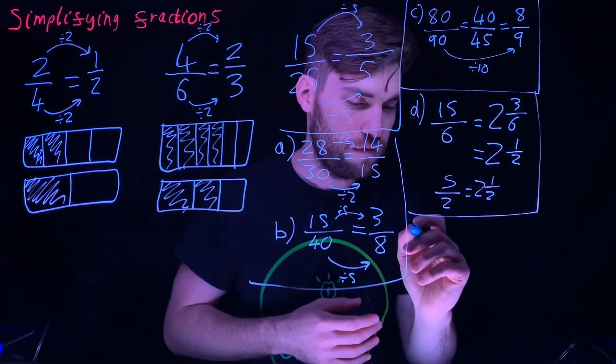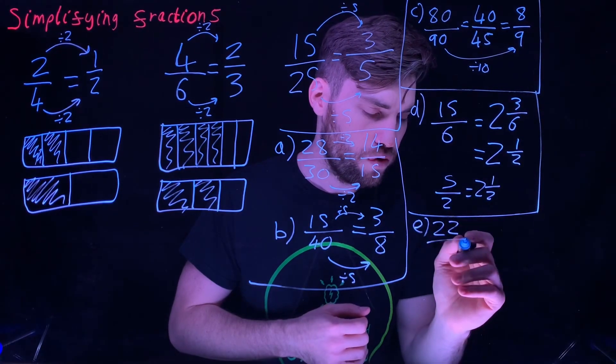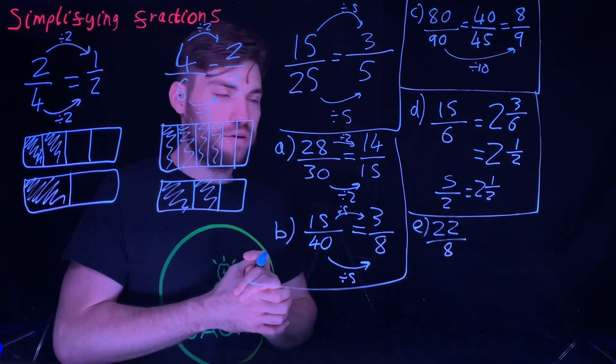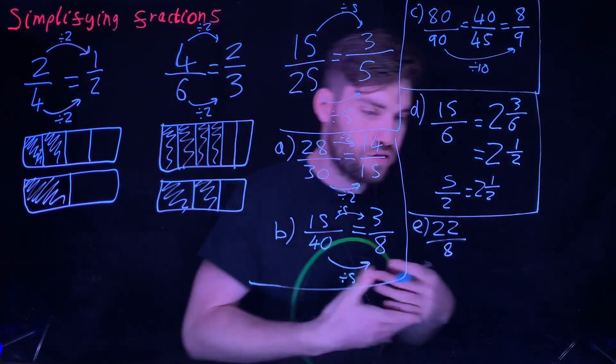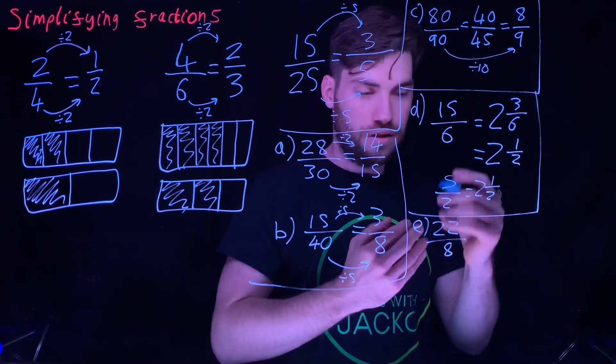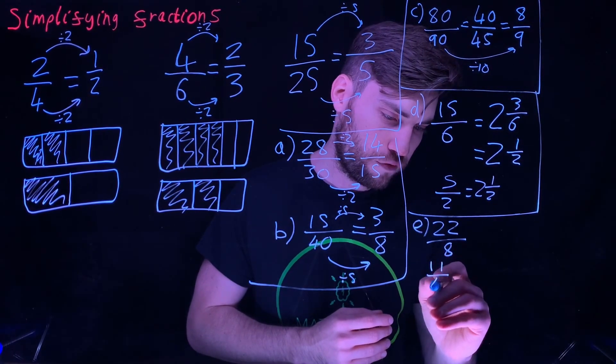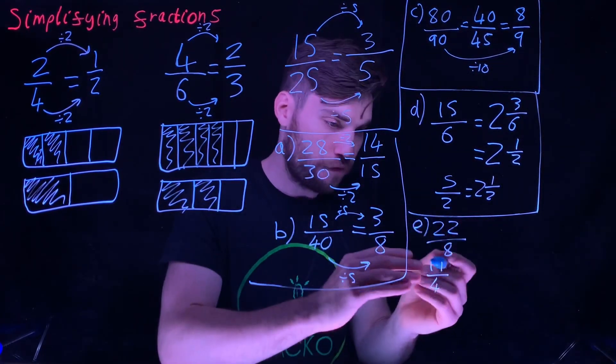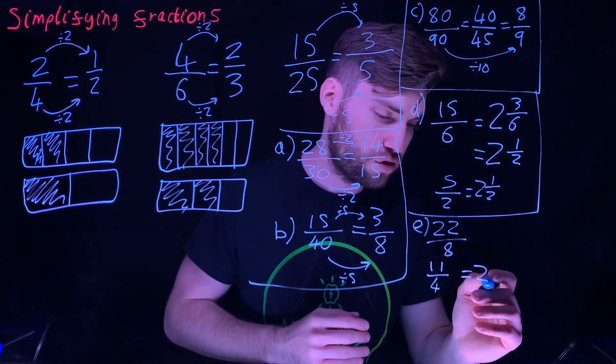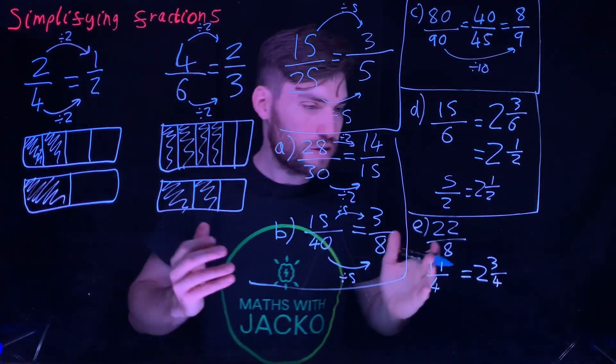We'll do one more involving an improper fraction. Let's say we've got 22 over 8. Pause the video and have a go. I'm going to simplify this first before converting to a mixed number. So 22 and 8, that goes to 11 over 4. I've just halved both numbers, half the numerator, half the denominator. How many 4s go into 11? That's 2 with 3 quarters left over.